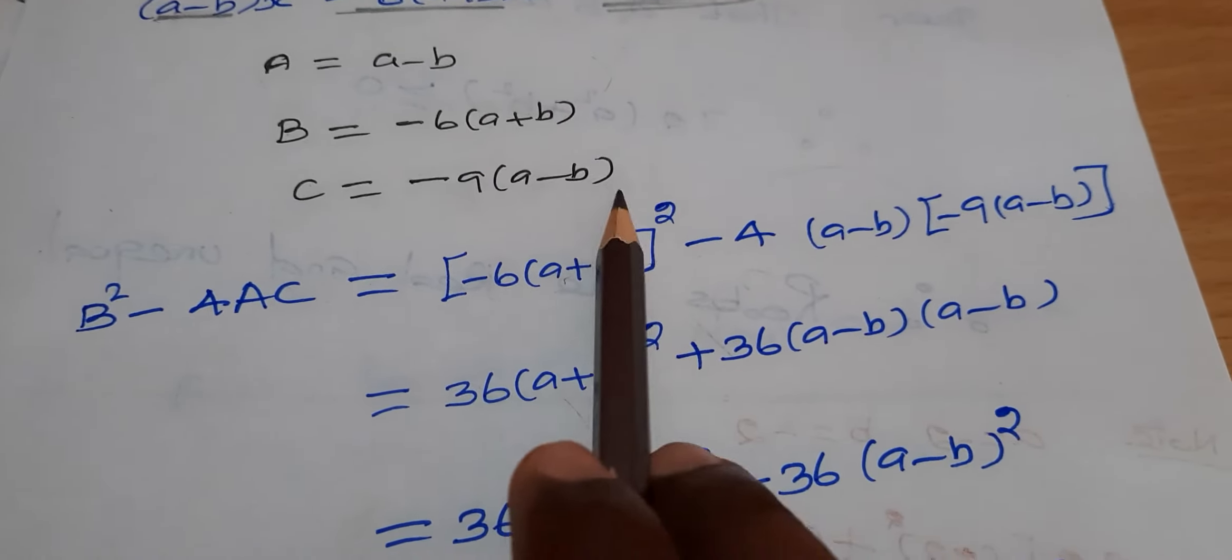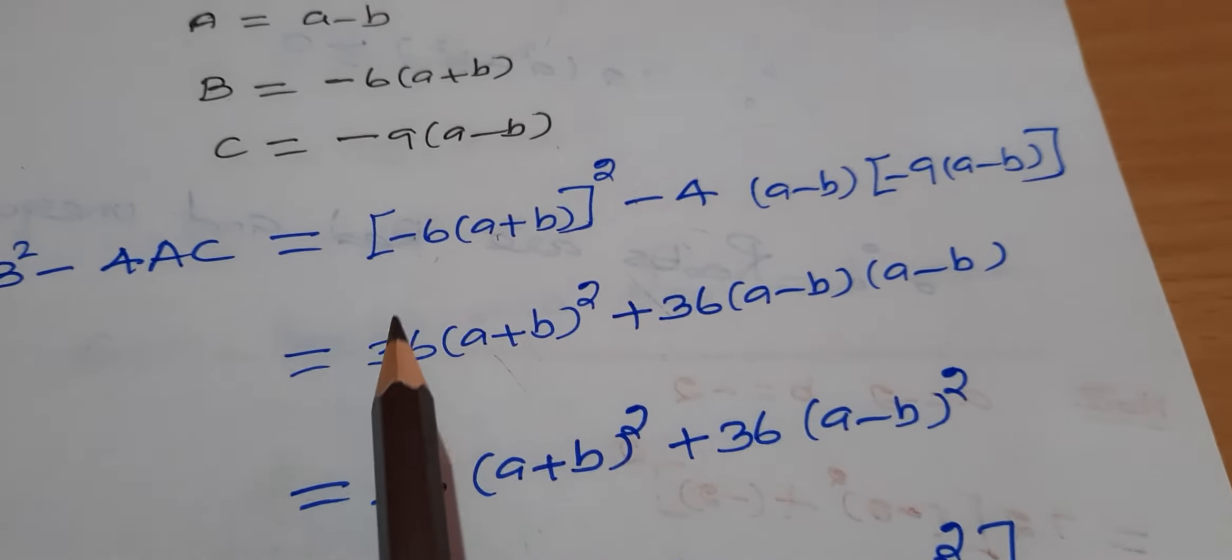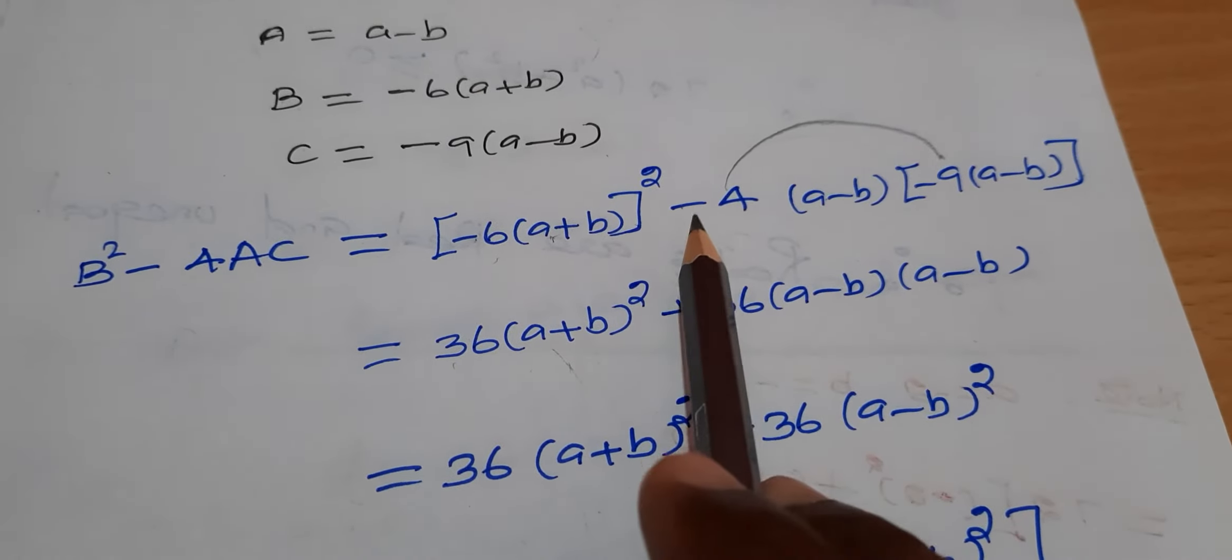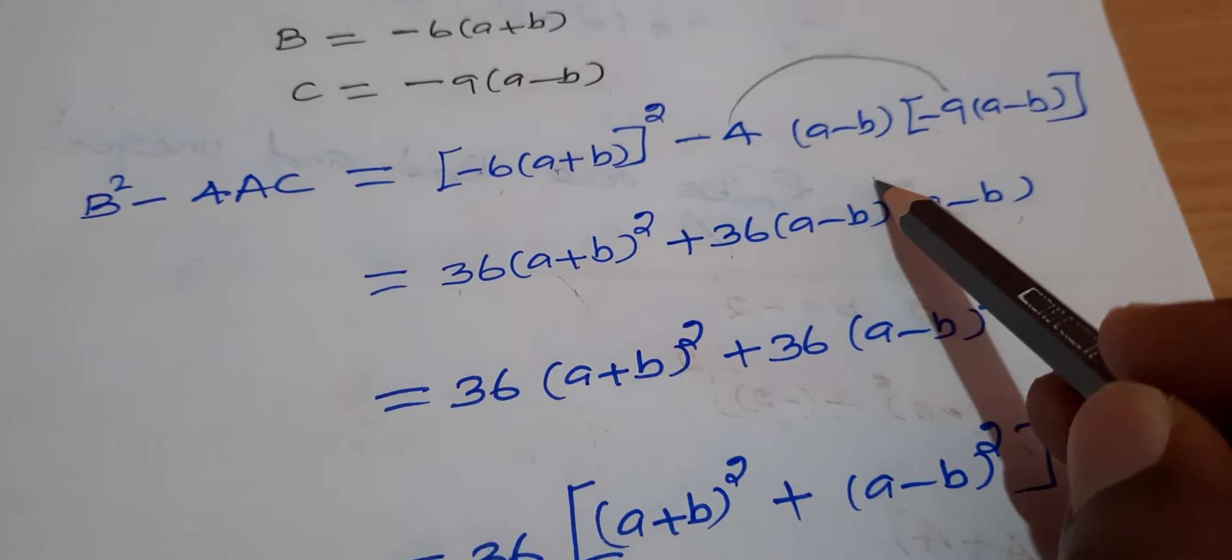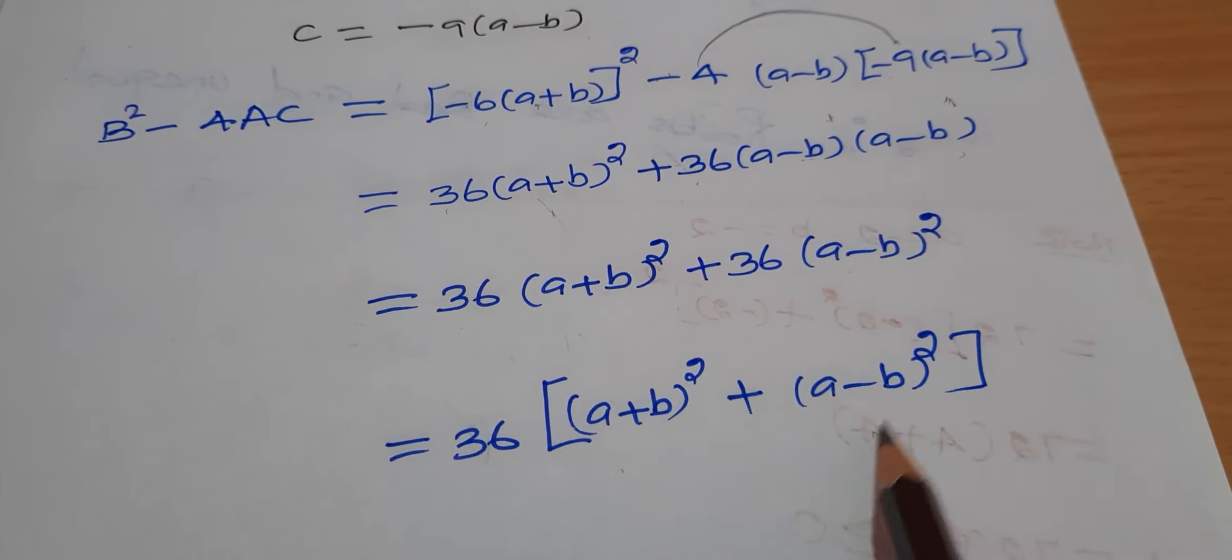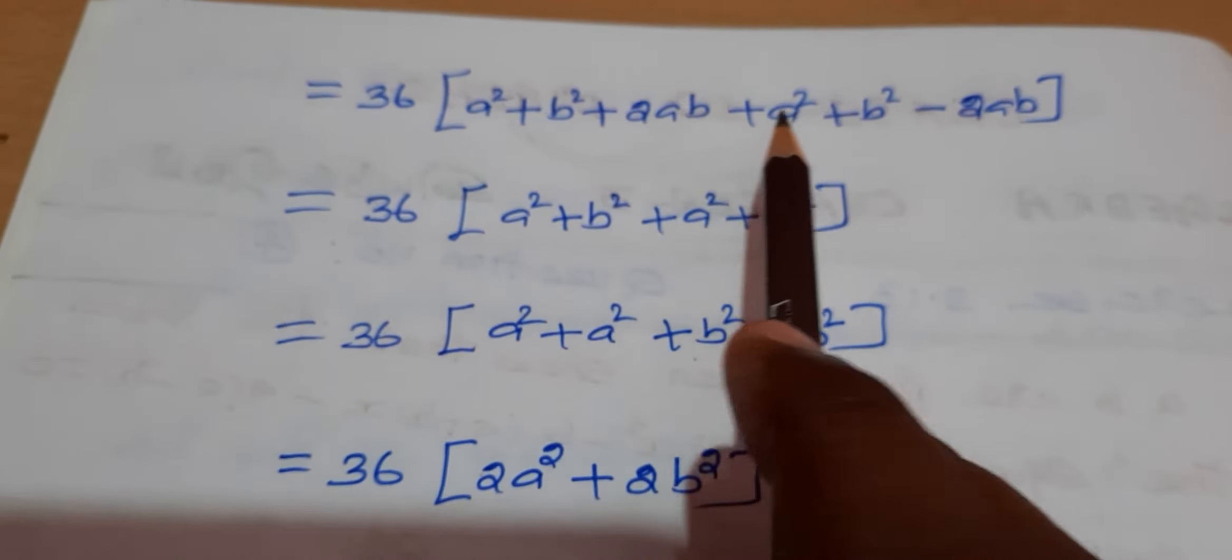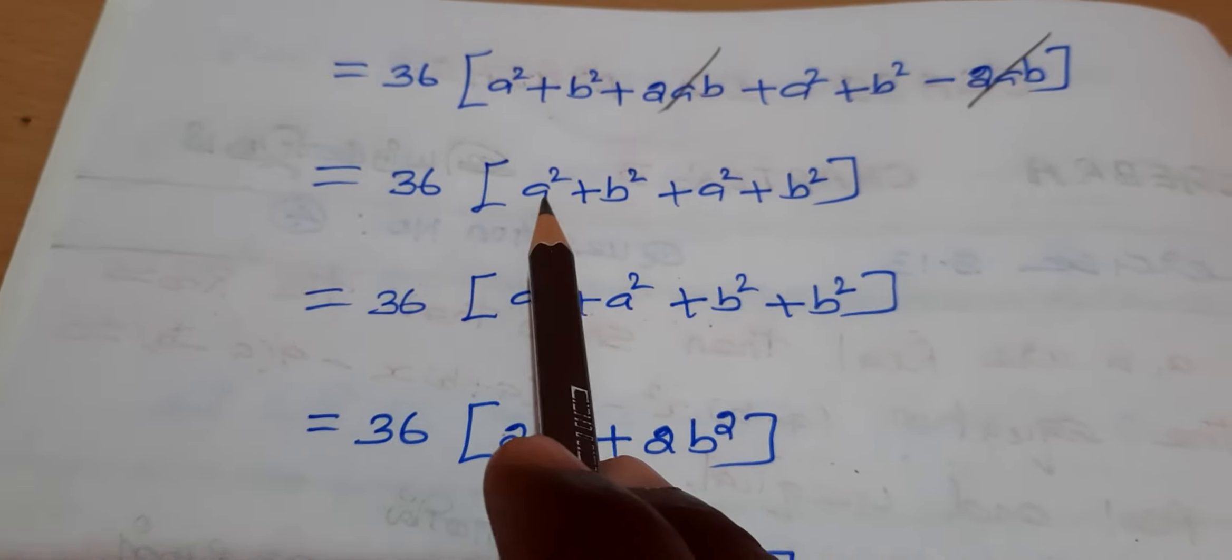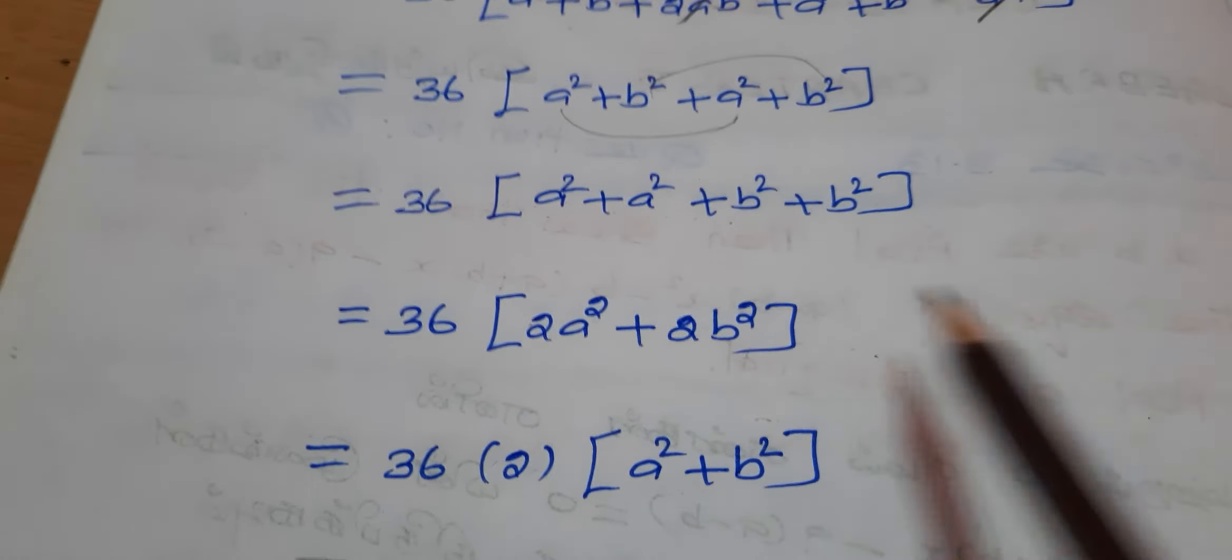B² - 4AC = [-6(a+b)]² - 4(a-b)[-9(a-b)] = 36(a+b)² + 36(a-b)² = 36[a² + b² + 2ab + a² + b² - 2ab] = 36[2a² + 2b²].